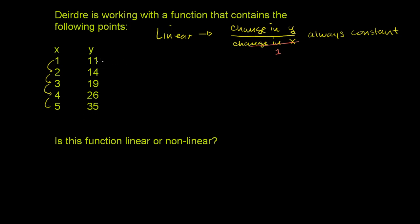When we go from 11 to 14, we go up by 3. When we go from 14 to 19, we go up by 5. So I already see that it is not constant — we didn't go up by 3, this time we went up by 5. And here we go up by 7, and here we're going up by 9. So we're actually going up by increasing amounts, which means we're definitely dealing with a non-linear function.